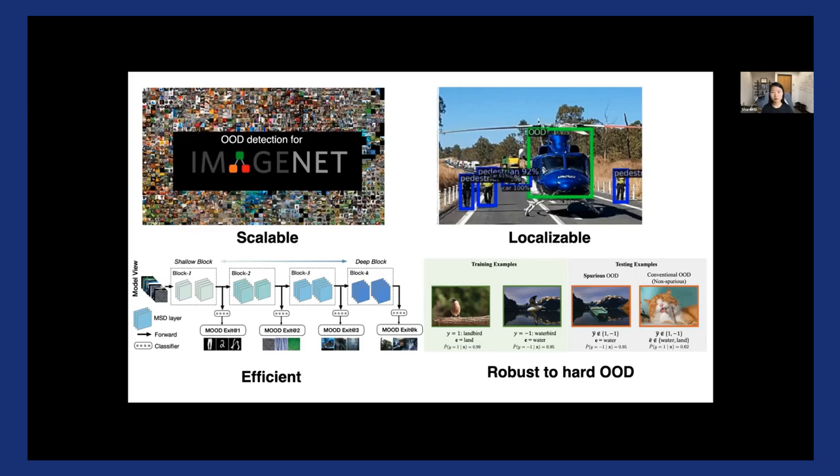And efficiency is another important consideration which could matter in safety-critical scenarios where latency matters. For example, in case of self-driving cars, being able to detect OOD in computationally efficient manner can potentially caution the driver far in advance, right? And so we need some efficient methods for detecting OOD with high accuracy as well.